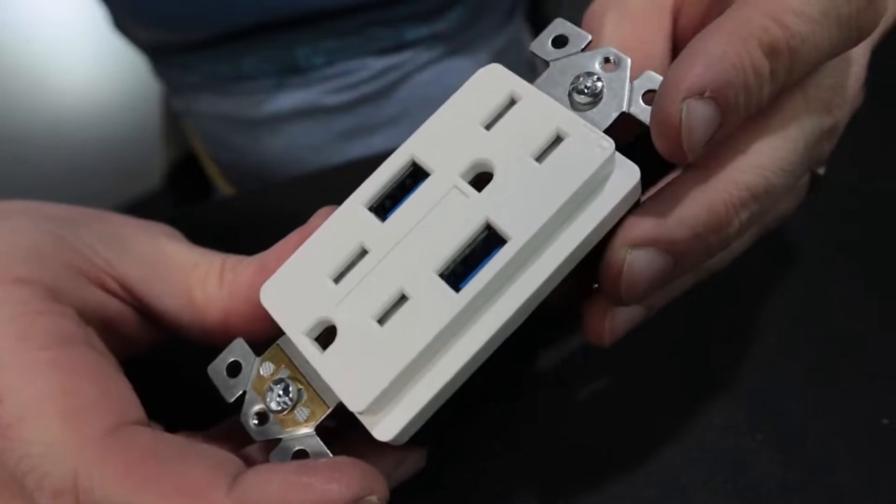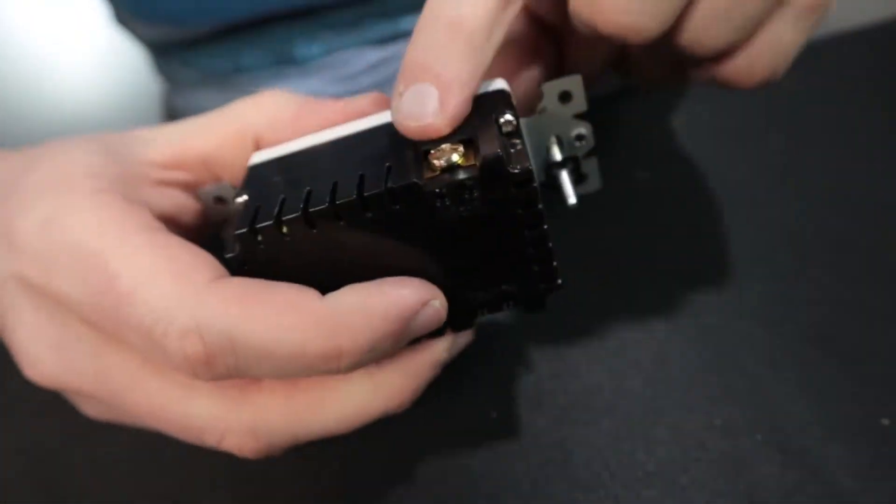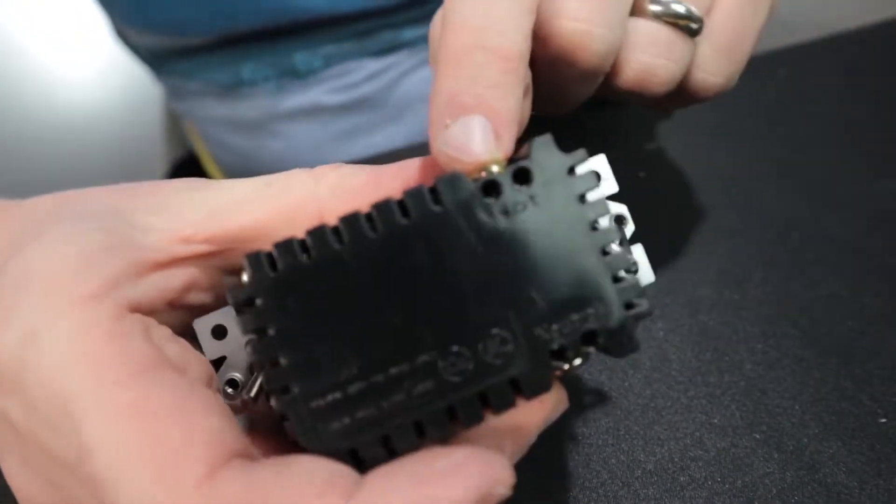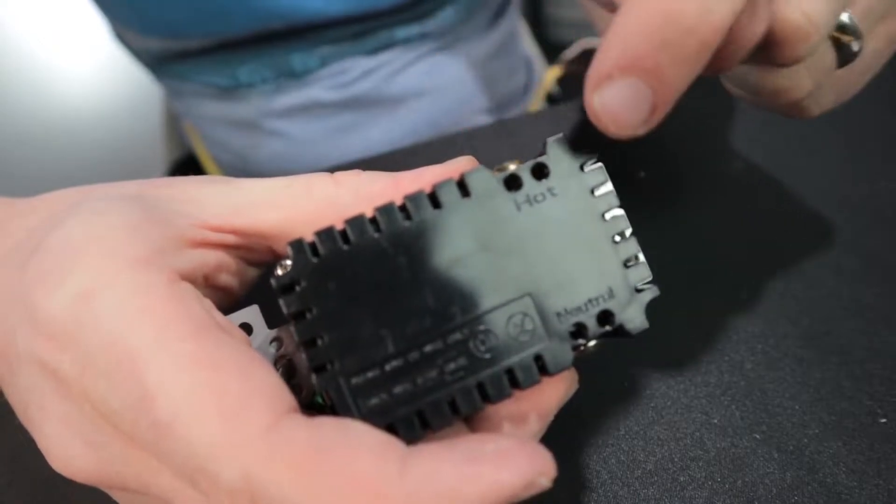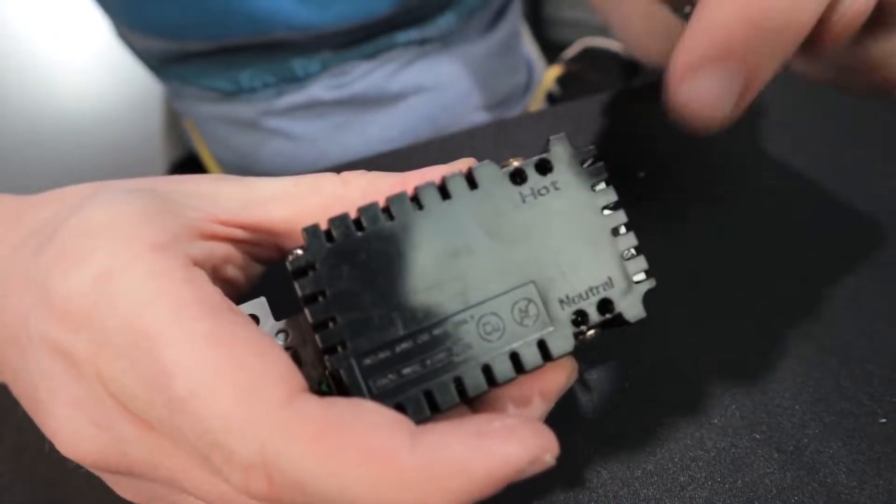The installation of this outlet is fairly straightforward. It has these screws here and there's two different holes. So we can see this is the hot side. It says hot. This is the neutral side.